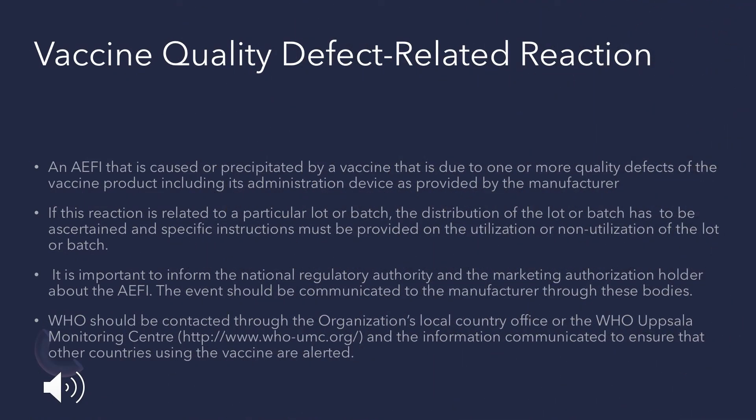Vaccine quality defect-related reactions occur when an adverse event is caused by the defective quality of the vaccine or the administration device. We must immediately check which lot or batch of the vaccine is causing the adverse event and inform the manufacturer. Precautions must be taken for the remaining vaccines in that batch or lot. Regulatory authorities should be informed, the WHO should be contacted through the Uppsala Monitoring Centre (UMC), and communication should go to other countries regarding whether to continue use of that vaccine.